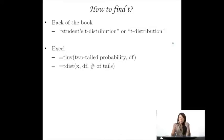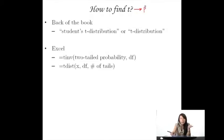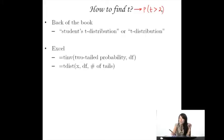So how do you find t at the end of the day? How do you find the t? And not only that, how do you find the probability associated with that t? For instance, where t is greater than 2. How do you find these probabilities? We know how to do it for z — how do you do it for t?